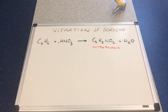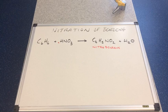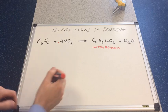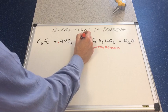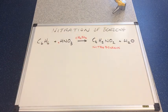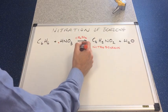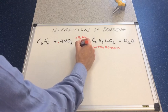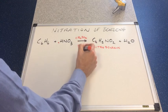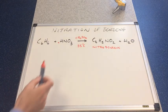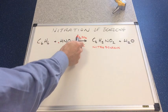Now this won't happen on its own, it needs some help. It needs a catalyst and the catalyst is concentrated sulfuric acid and the temperature is about 50 to 55 degrees C. So we've got reagents and conditions.